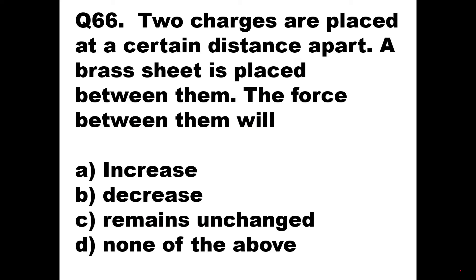Question number 66: Two charges are placed at a certain distance apart and a brass sheet is placed between them. The force is given as the product of two charges upon the square of the distance between them. When a brass sheet is placed between them, the product of the two charges will become less, so the magnitude of force decreases. Option B is the right answer: the force decreases.